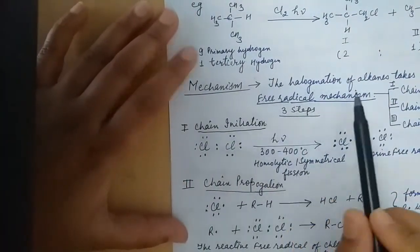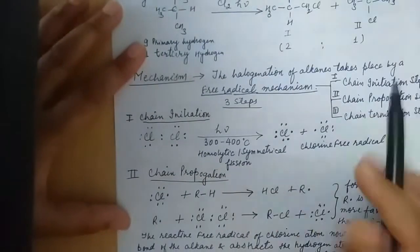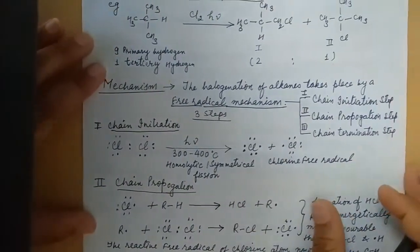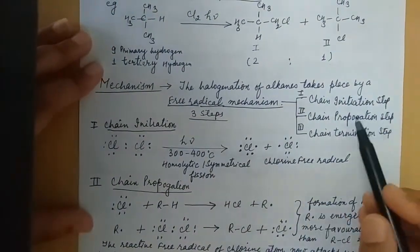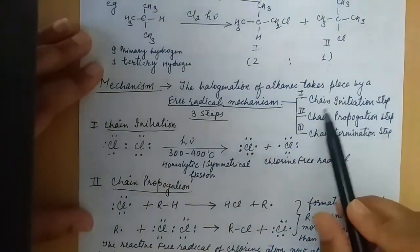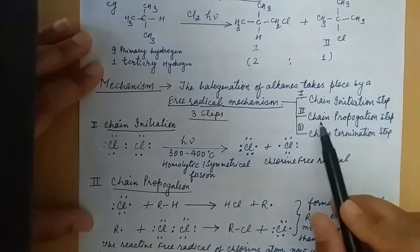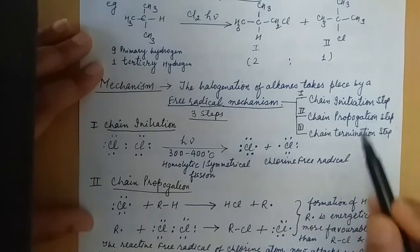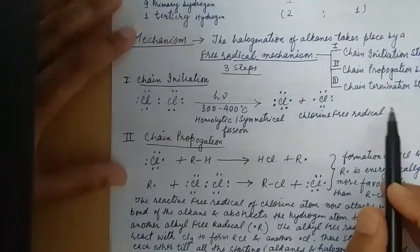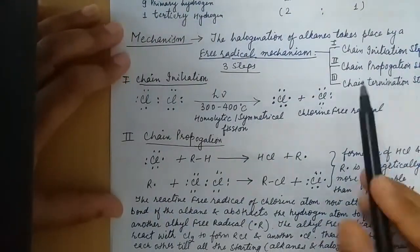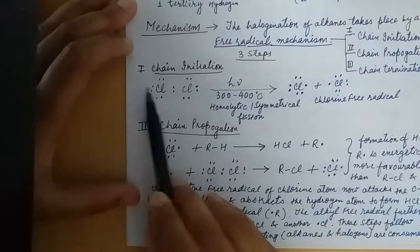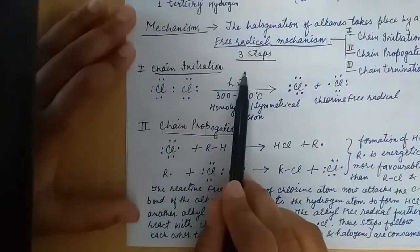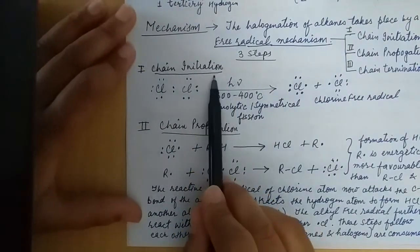The halogenation of alkanes takes place by the free radical mechanism in which we go through three steps: chain initiation, chain propagation, and chain termination. These are the common steps. First we do chain initiation.